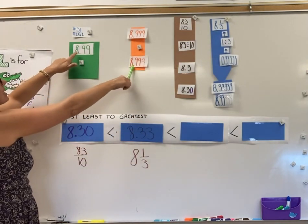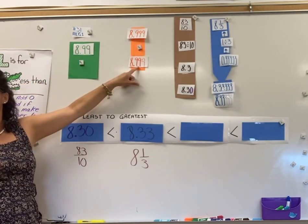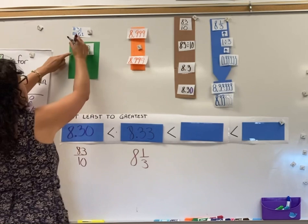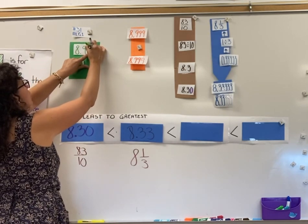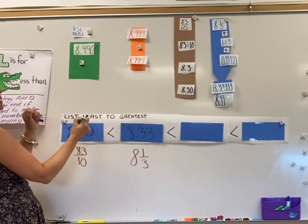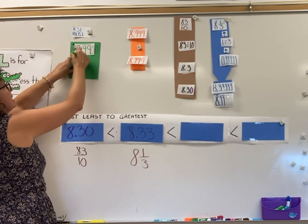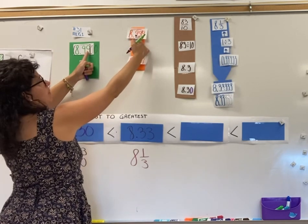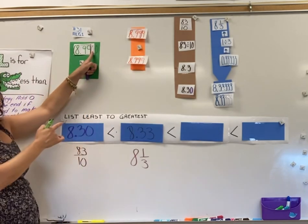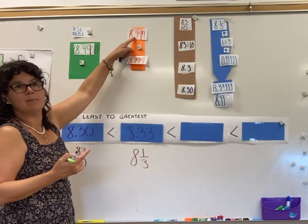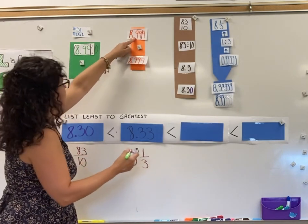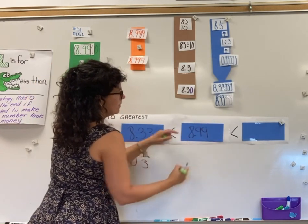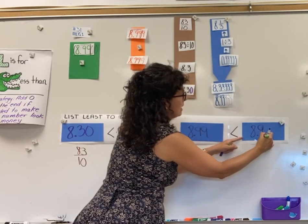Now these two are currently tied: $8.99 and $8.99. When numbers are tied, you want to look at the digit after. I'll throw a zero on here — money-wise, this one is $8.990 and this one is $8.999. Looking one number past the tie, I'm comparing 0 with 9, and 9 is bigger. So $8.99 comes next, and then $8.999 is our biggest number.